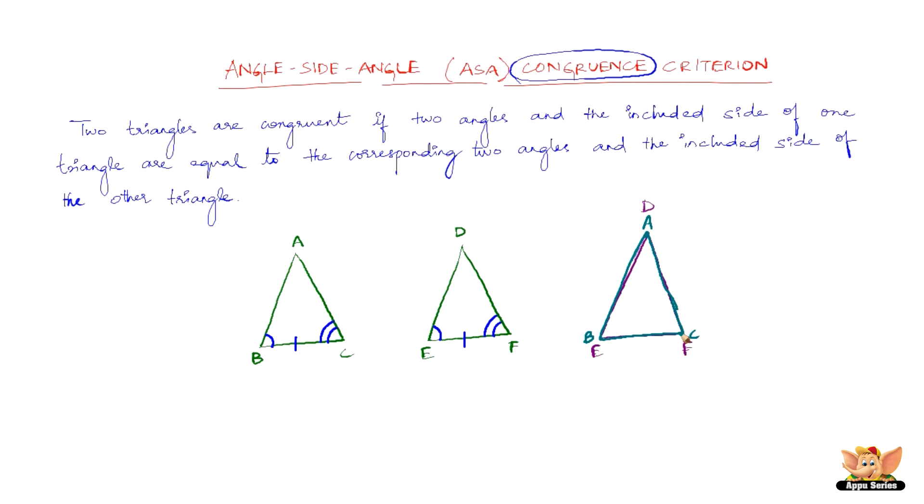So everything is coinciding here because angle, side, and angle, they are all equal to each other. So that is why we can say that triangle ABC is congruent to triangle DEF.